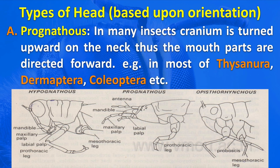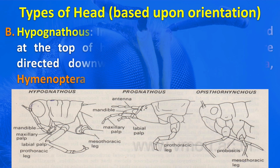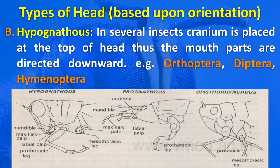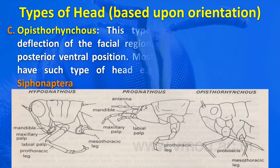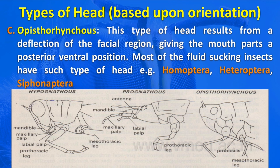Examples of prognathous head are Thysanura, Dermaptera, Coleoptera, etc. In hypognathous, examples are Orthoptera, Diptera, and Hemiptera. In opisthognathous, the types of head are found in Homoptera, Heteroptera, and Siphonaptera.